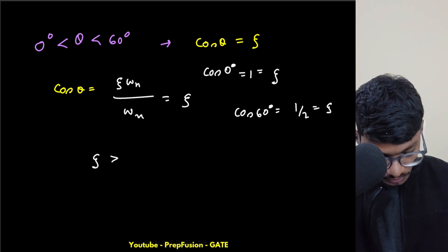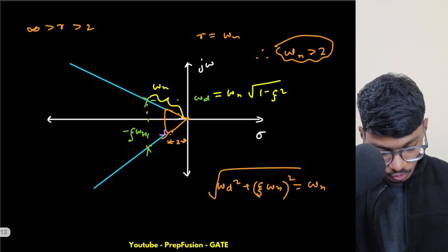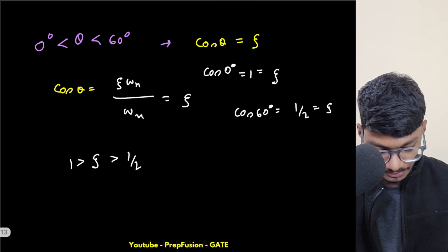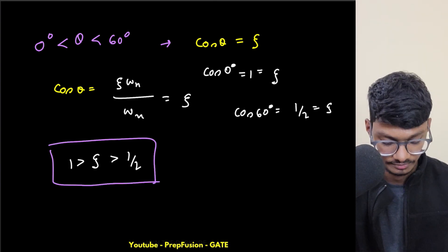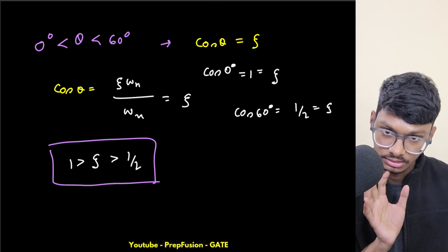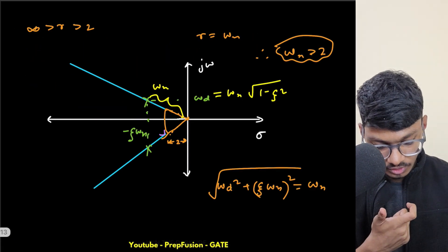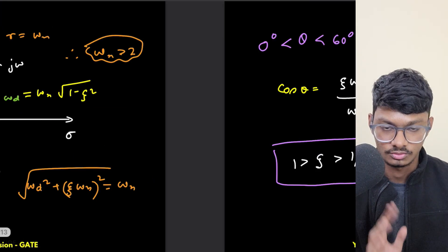So my zeta will be greater than half and less than 1. These are the two conditions for my zeta and omega n. If the options are present like this, then you can tick mark wherever these two conditions are satisfied: zeta will be greater than half and less than one, and omega n will be greater than two. This is the answer for this question. Thank you for watching.